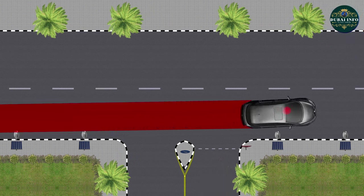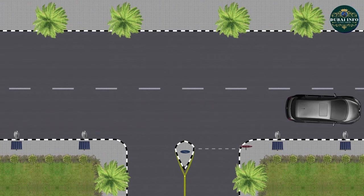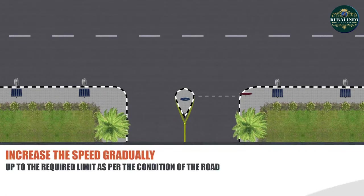Check centre mirror to see the traffic behind. Cancel the signal and increase the speed gradually up to the required limit as per the condition of the road.